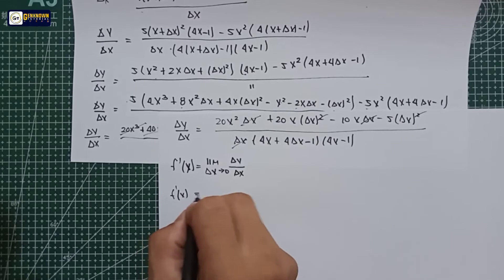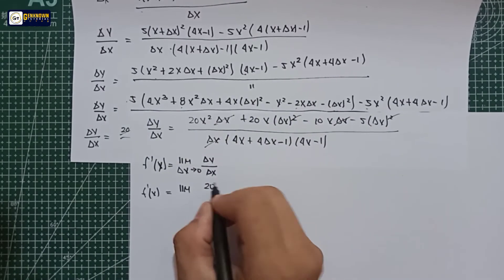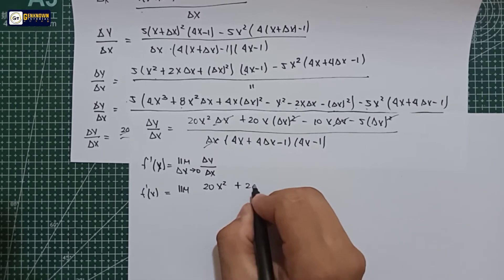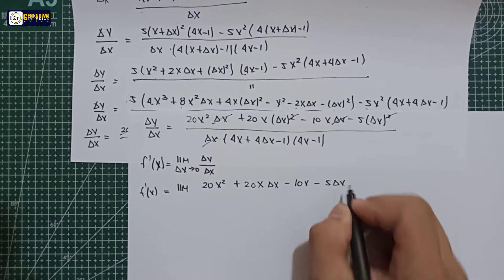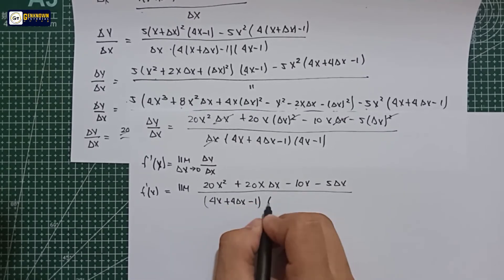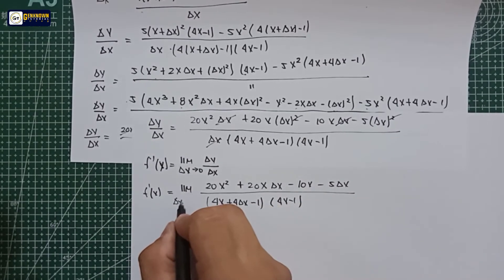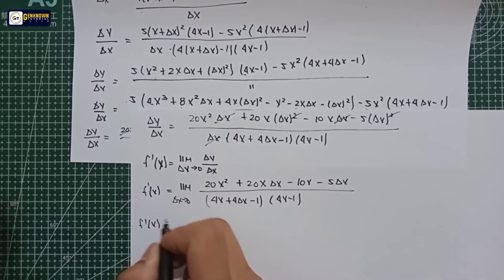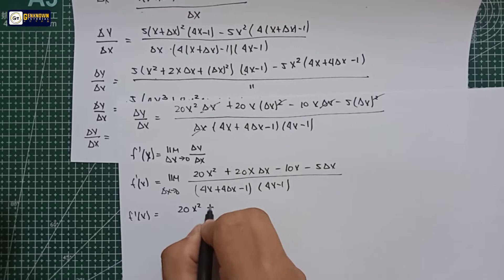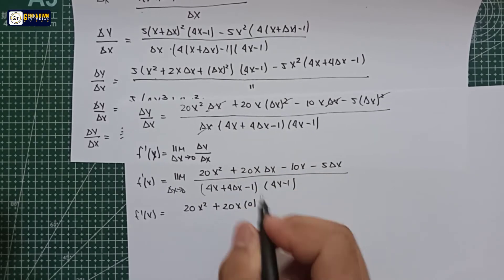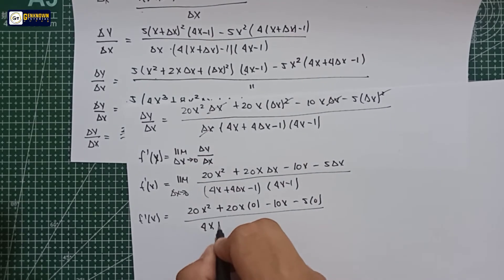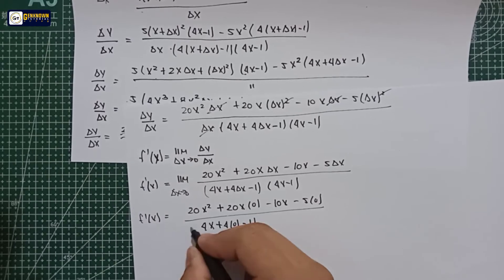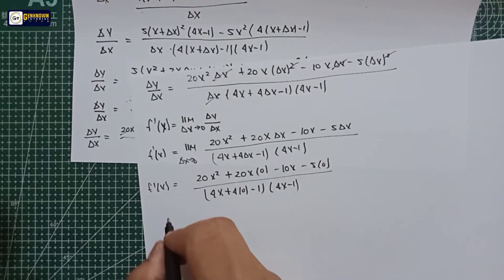So f prime of x is equal to the limit of: (20x squared plus 20x·delta x minus 10x minus 5·delta x) all over (4x plus 4·delta x minus 1) multiplied by (4x minus 1), as delta x approaches 0. Substituting delta x equals 0: we get 20x squared plus 20x times 0, minus 10x, minus 5 times 0, all over 4x plus 4 times 0 minus 1, multiplied by (4x minus 1).